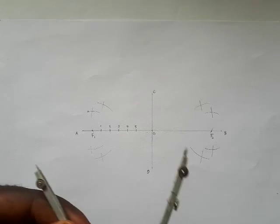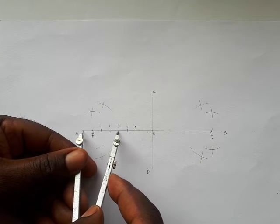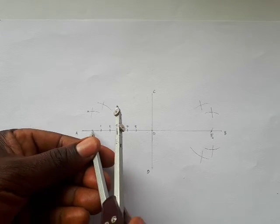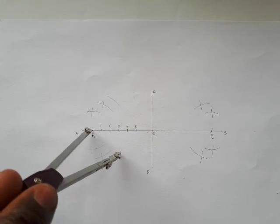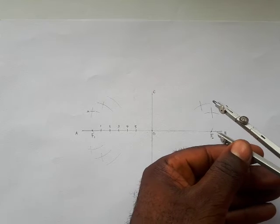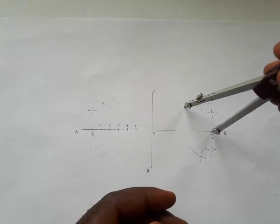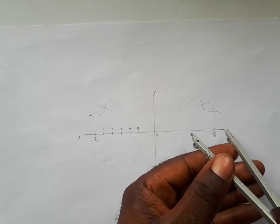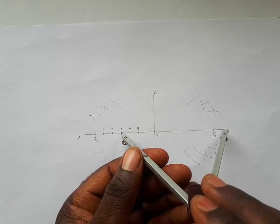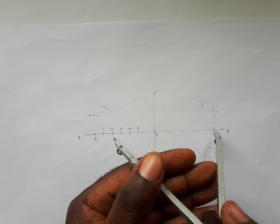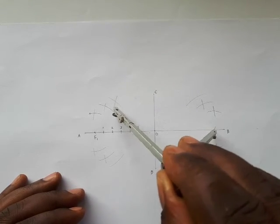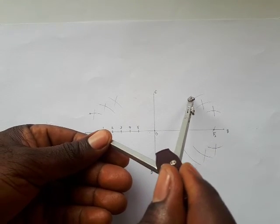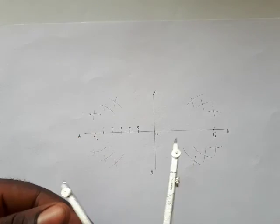So you move over to A3. Just do the same thing up to A5. This is A3, you needle on F1, you draw an arc here, draw an arc here. You needle on F2 with same radius, you draw an arc here, you draw an arc here. Then you stretch B3. With B3, you needle on F2, cut that arc, cut this arc, then you needle on F1, you cut this arc and you cut this one. So you continue for 4 and 5.